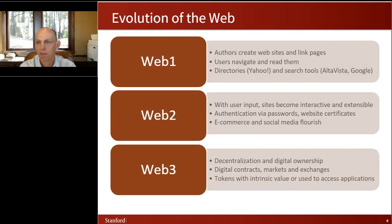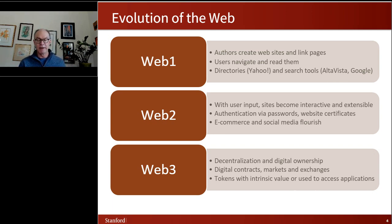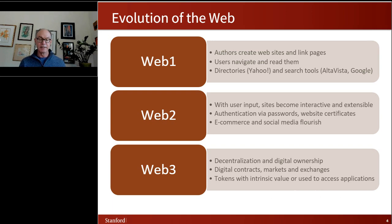To talk about Web3, we have to start with Web1. The web came into being after the internet was already in place, as a way of building an application layer and exchange of information over the internet. Web1 was simply the protocols and tools for writing web pages, linking them together, and reading them — created by physicists who wanted to share experiments, papers, documents, and data. It was not an interactive medium; authors would build content and readers would find it.